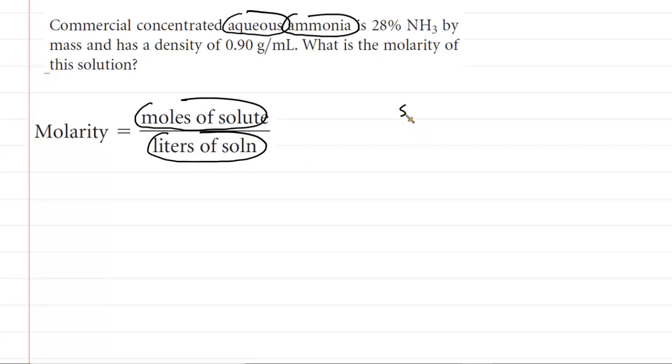If you think about the solution components, we can write down solution here and break that up into two components. Because it's an aqueous solution, one component would be water, and the other component would be NH3. It's only 28% NH3 by mass, so the NH3 is present in lesser abundance, and that will make this our solute. The water will be present in greater abundance, so that will be your solvent.